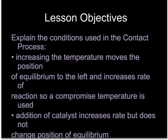At higher level, you need to explain — not just remember — the conditions used. Increasing the temperature moves the position of equilibrium to the left but also increases the rate of reaction, so a compromised temperature is reached. The addition of a catalyst increases the rate but doesn't affect the position of equilibrium. Atmospheric pressure is used because the rate is already fast enough with the catalyst, and using high pressure would cost too much money.